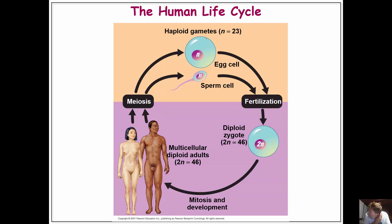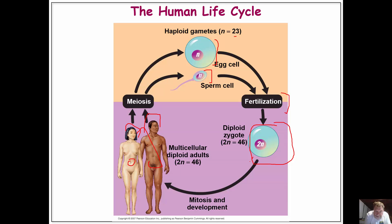Before we looked at the life cycle: interphase and then meiosis — prophase, metaphase, anaphase, and telophase. In the life cycle, we have two individual human beings whose gonads undergo meiotic division, which is a reductive cell division. This produces an egg and a sperm, each with 23 chromosomes. These two come together through fertilization to give us our diploid zygote, which then grows by mitosis and development to become adults, who then go through meiosis again.